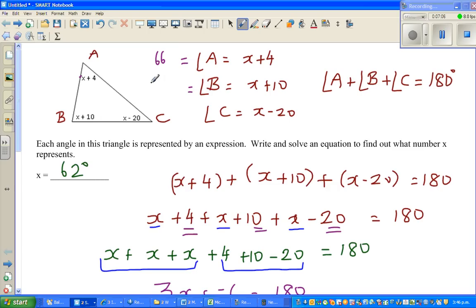Angle B is x plus 10, which is 62 plus 10, which is 72. And angle C is x minus 20, which is 62 minus 20, which is 42.